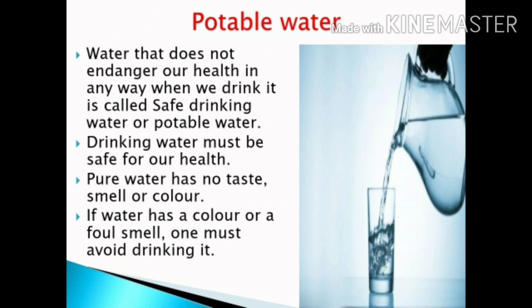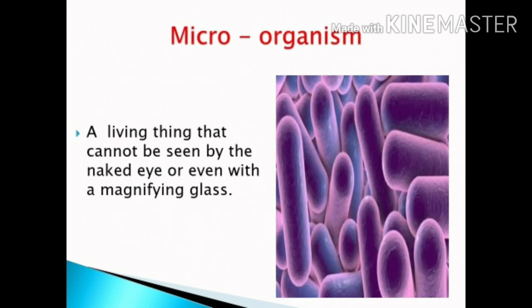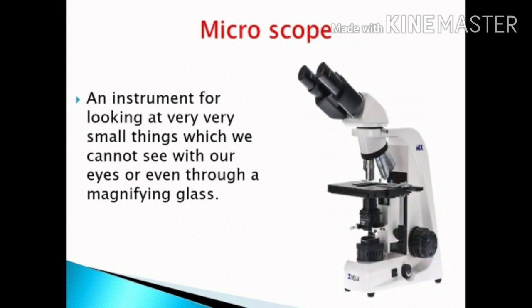Microorganism means a living thing that cannot be seen by the naked eye or even with a magnifying glass. A microscope is an instrument for looking at very small things which we cannot see with our eyes or even through a magnifying glass.